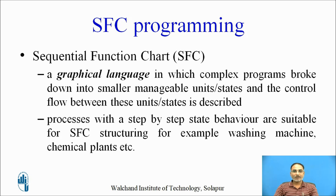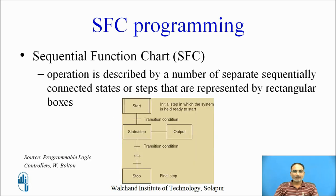Sequential function charts are basically suitable for processes in which behavior changes step by step — for example, washing machines, chemical plants, etc. A basic structure of a sequential function chart is shown with square boxes, connections between them, and some branches. In SFC, the operation is described by a number of separate sequentially connected states or steps.